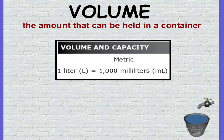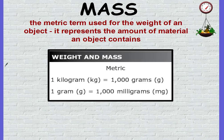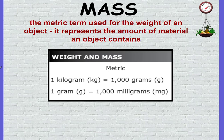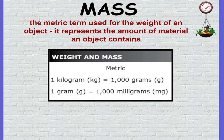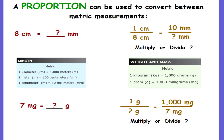Mass is the metric term used for the weight of an object — it represents the amount of material an object contains. In sixth grade we use kilograms, grams, and milligrams. Now let's get started. We're going to use a proportion to make these conversions.